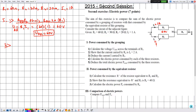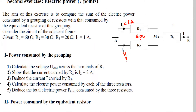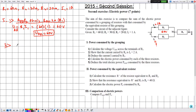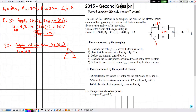We need to calculate the value of current I2 traversing resistor R2. We know the applied voltage is 60 volts and the resistance of R2 is 30 ohms. By applying Ohm's law to R2 we can calculate I2. Let's apply Ohm's law to R2.